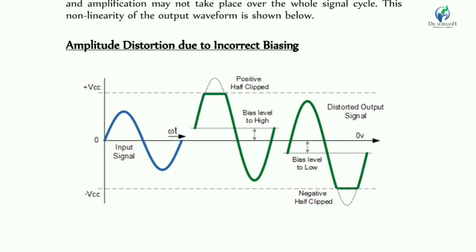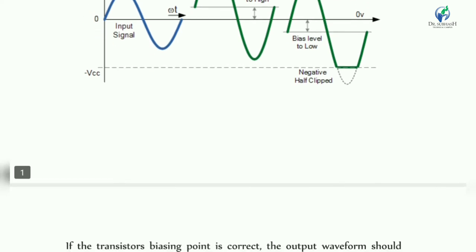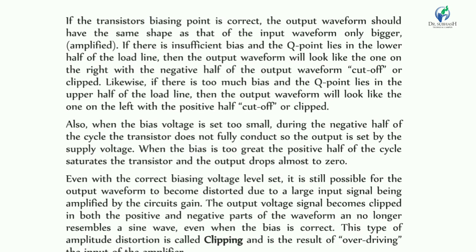In the second figure shown, the output should have the same shape as the input — only bigger — but when the transistor biasing shifts, there is some clipping of the peak. The output waveform shows clipping distortion.